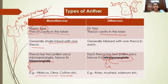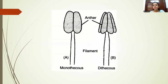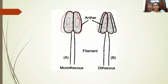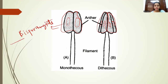Examples of dithecal anthers include rose, mustard, and Solanum tuberosum — the botanical name of the potato plant. The image shows monothecal anther with one single lobe and two microsporangia, and dithecal anther with two lobes and four microsporangia. Monothecal anthers are called bisporangiate as they have only two microsporangia, and dithecal anthers are called tetrasporangiate as they have four microsporangia.